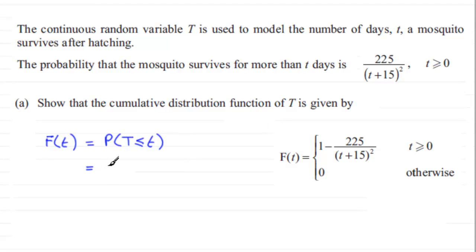Now what we've got here is the probability of T being greater than t. So this is going to be 1 minus the probability of T being greater than or equal to an observed value t.